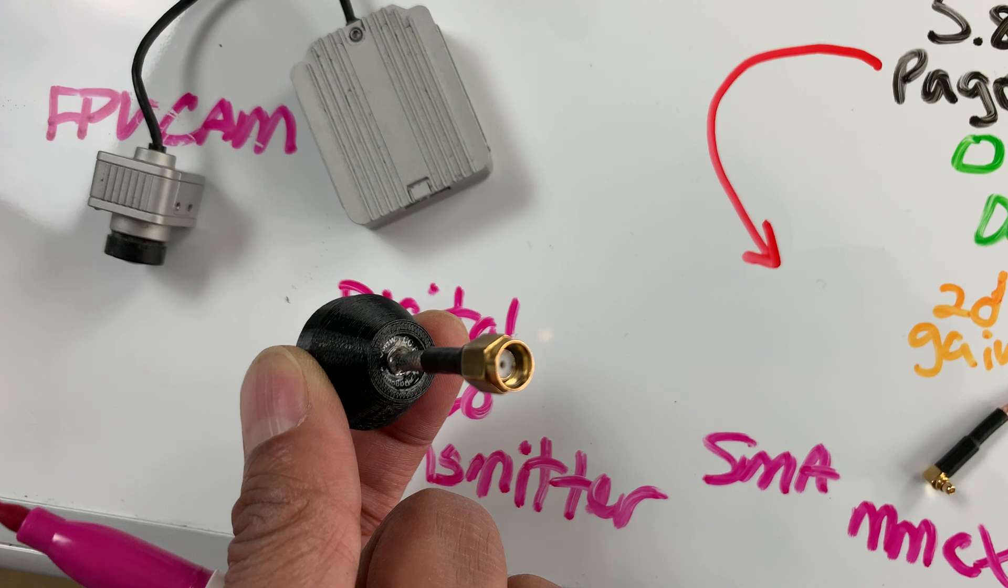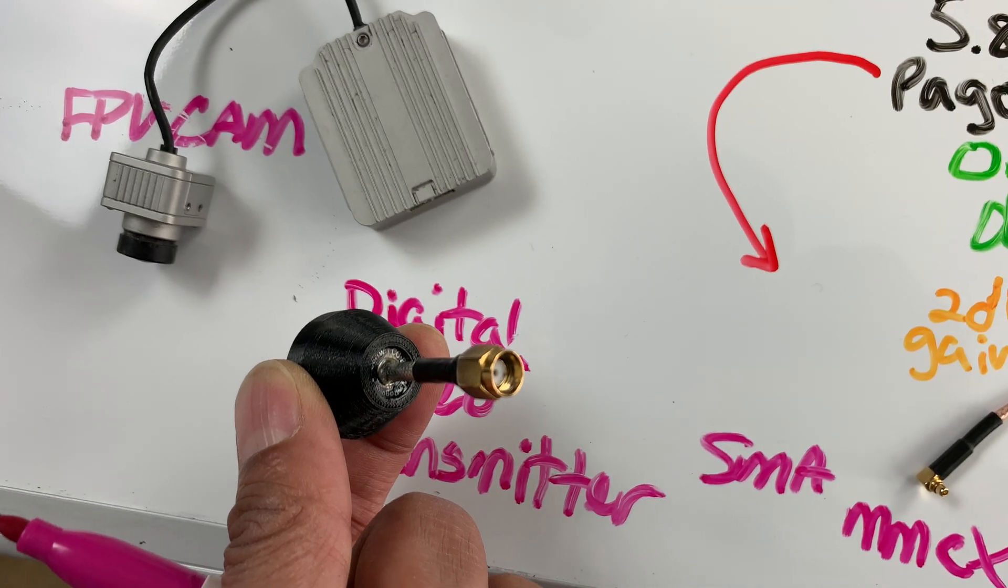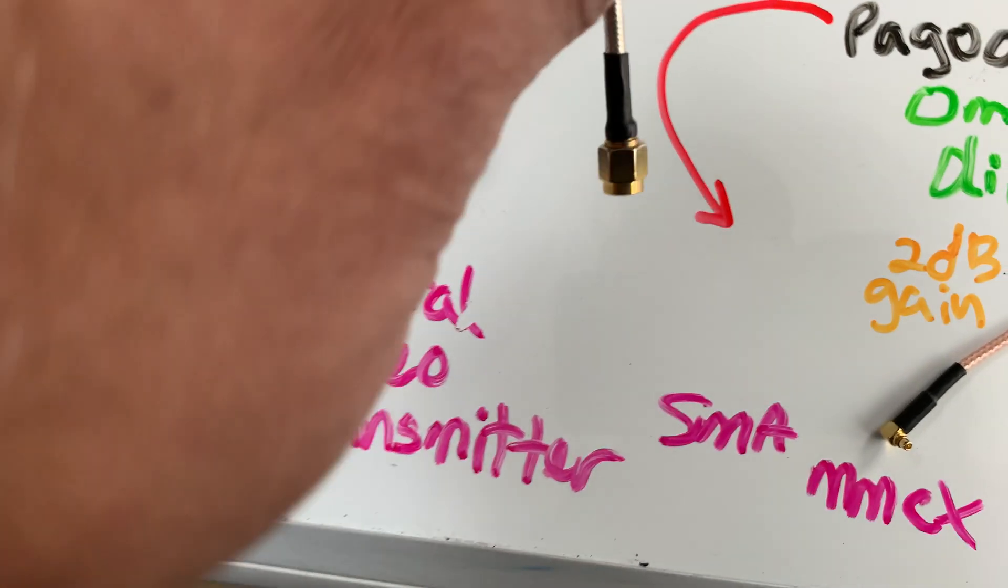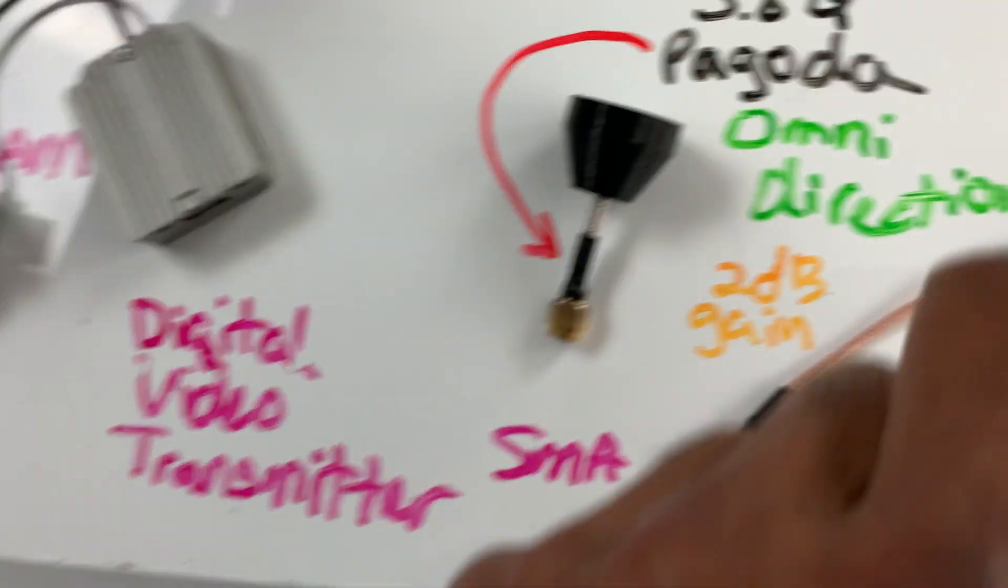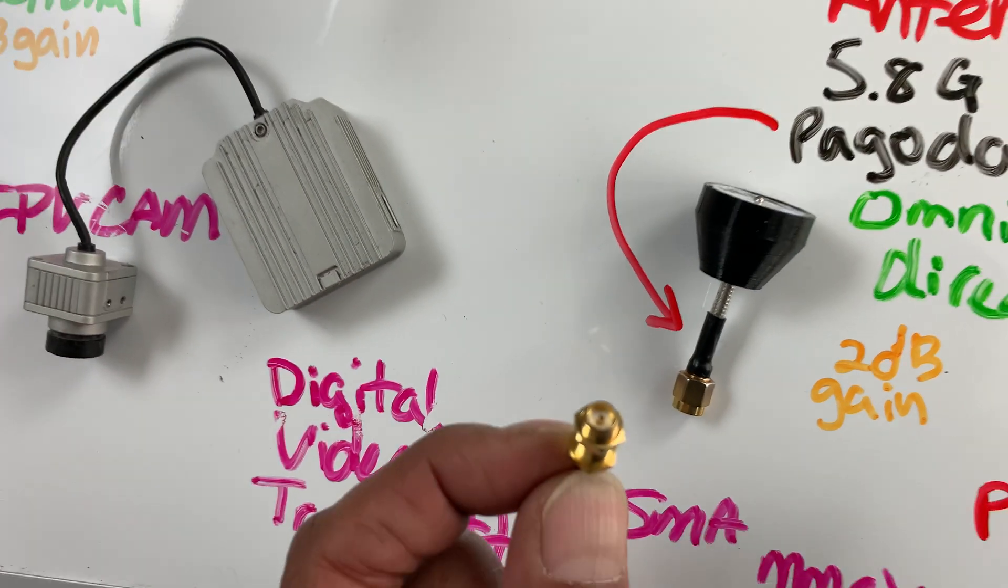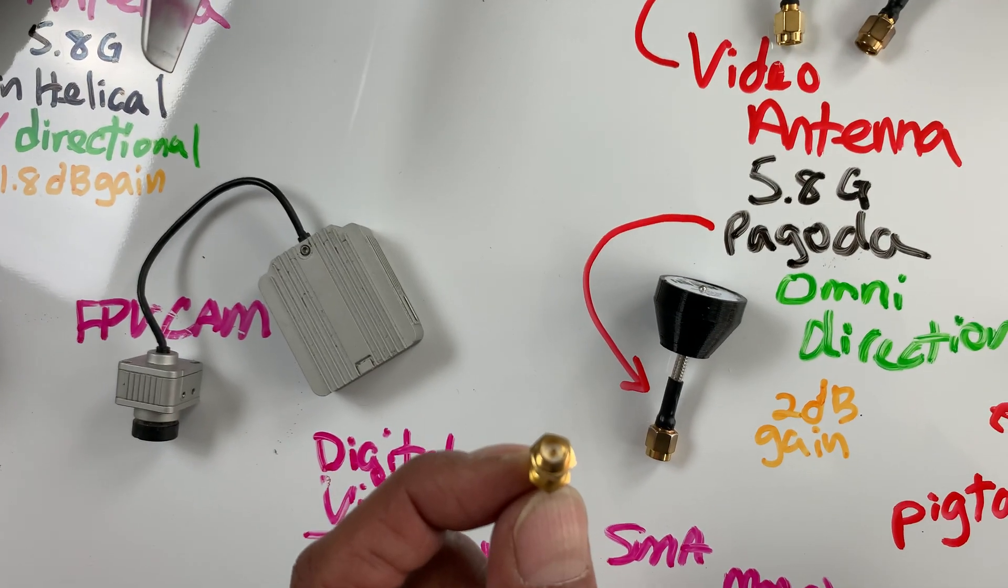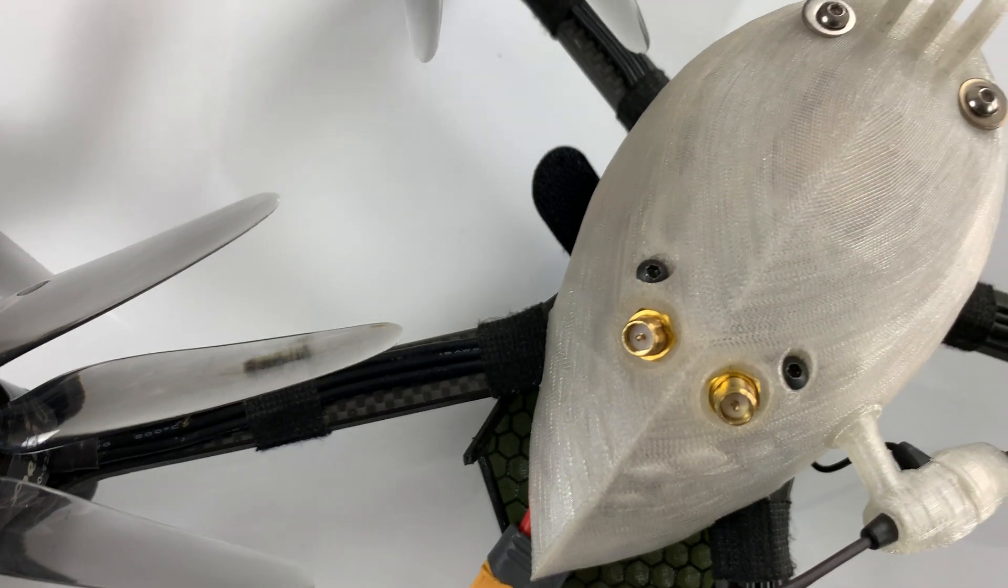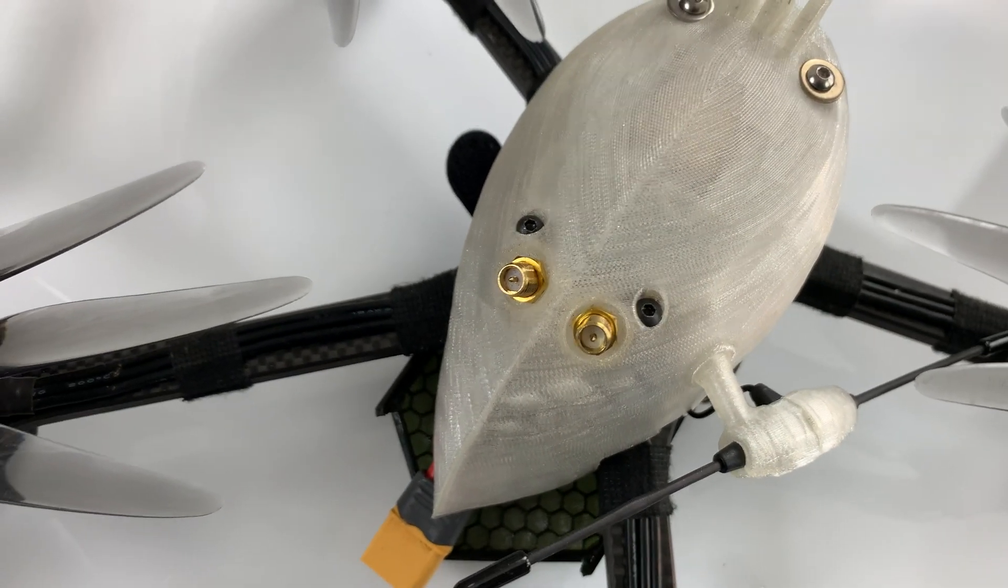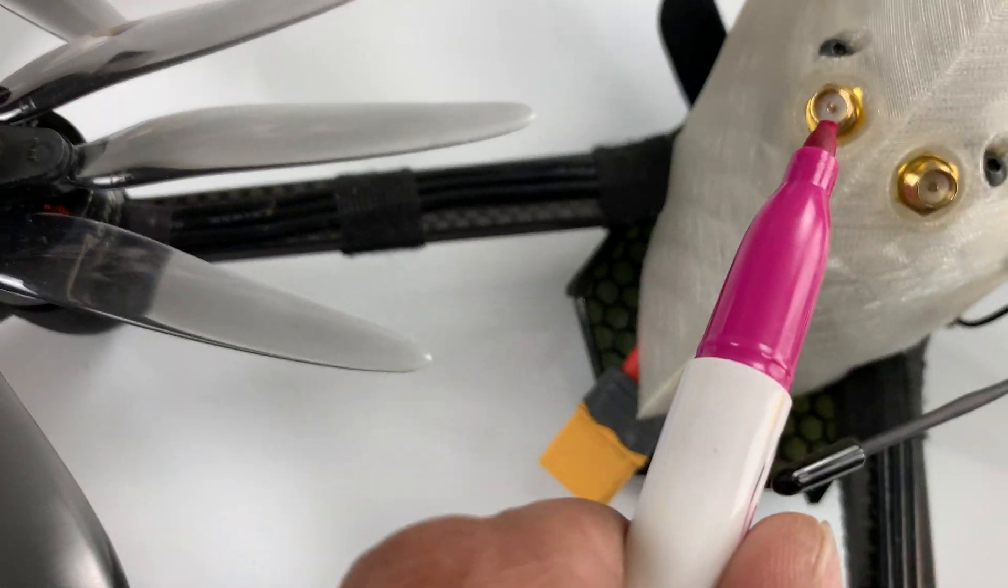And this one, there's no pin sticking out, but they call this the SMA male, RP-SMA male. And on the other end, where it connects, you have to have the pin on the drone side to connect into the antenna. So you can see that pin sticking out right there.